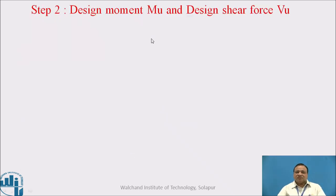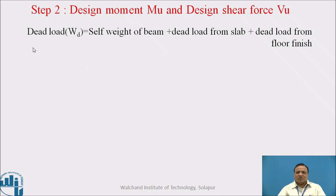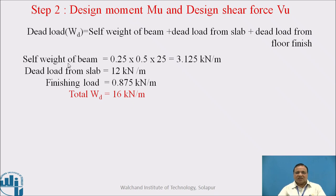Step 2: Design moment MU and design shear force VU are to be determined. For this we have to calculate the dead load. Dead load consists of self weight of the beam, dead load from slab, and dead load from floor finish. Self weight of the beam is 0.25 × 0.5 × 25, which equals 3.125 kilonewton per meter. Dead load from slab is 12 kilonewton per meter. Floor finish load is 0.875 kilonewton per meter. Total dead load is 16 kilonewton per meter.